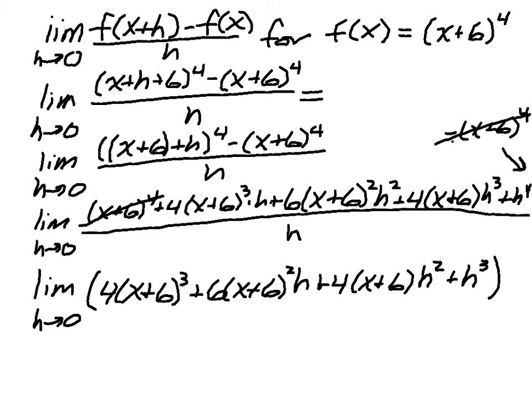And now if I take the limit as h approaches 0, I have a couple of terms that are going to zero out because this is something in terms of x times h, but h is approaching 0, so this will zero out. Here we have another h times something, but since h is approaching 0, this zeros out, and this zeros out.